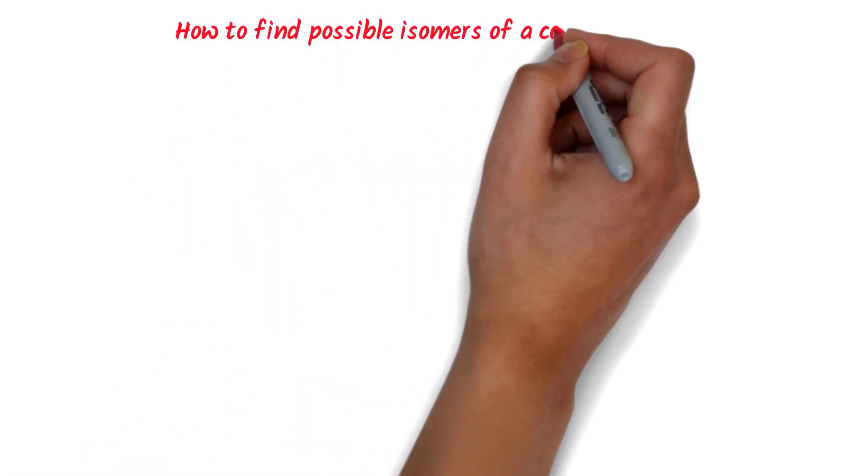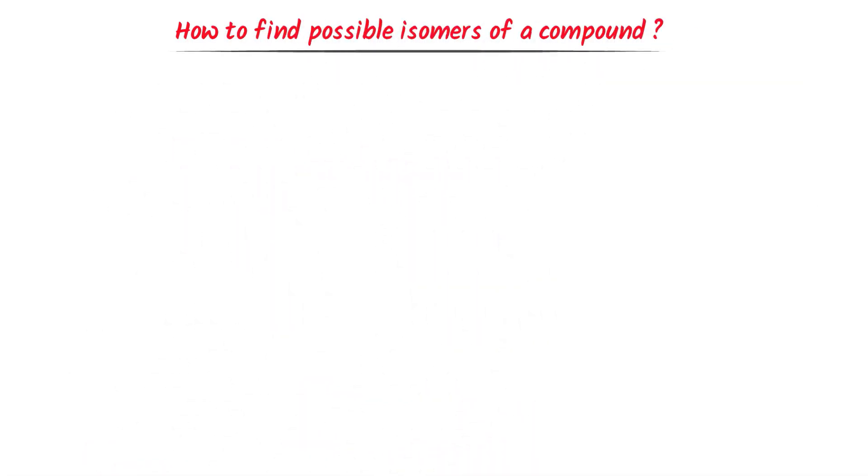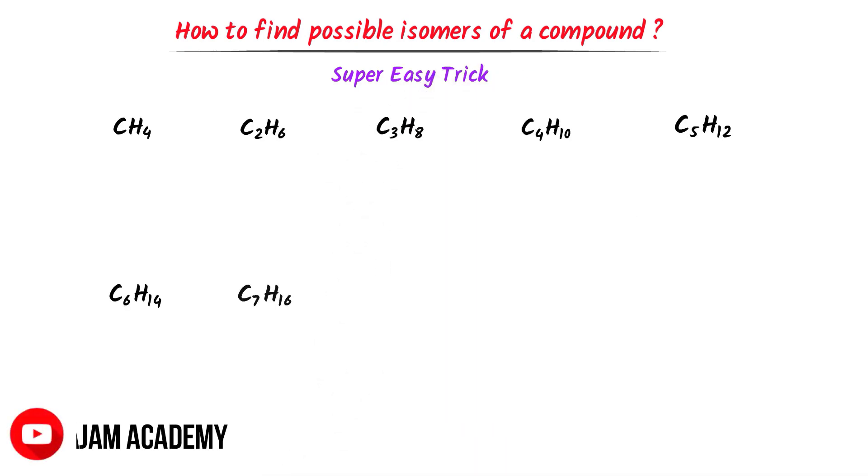How to find possible isomers of a compound? I will teach you a super easy trick to find possible isomers of the first 10 alkane members.